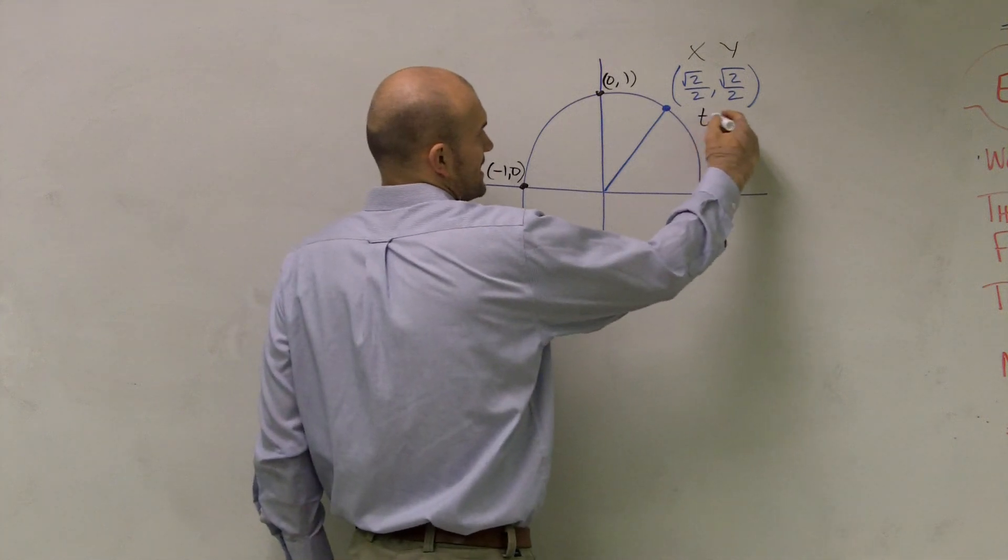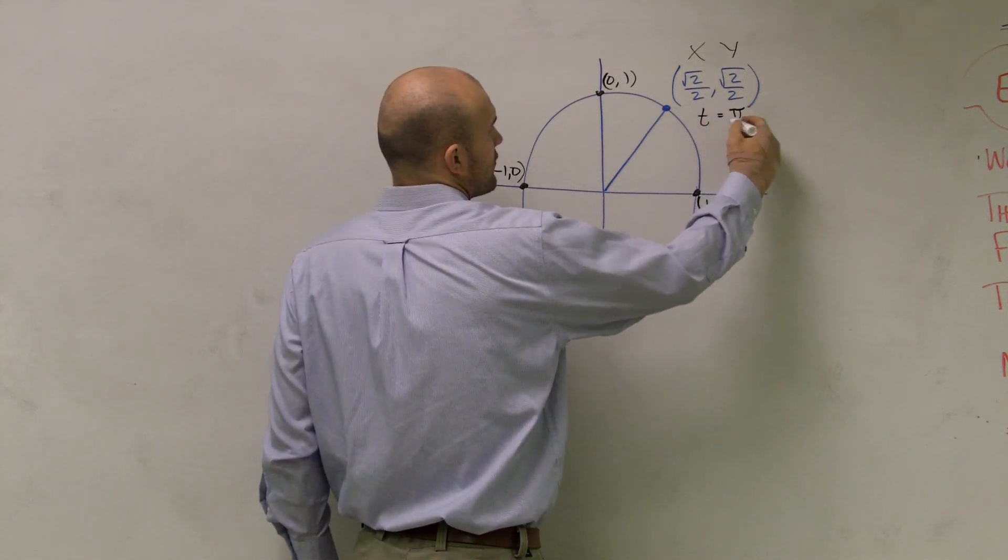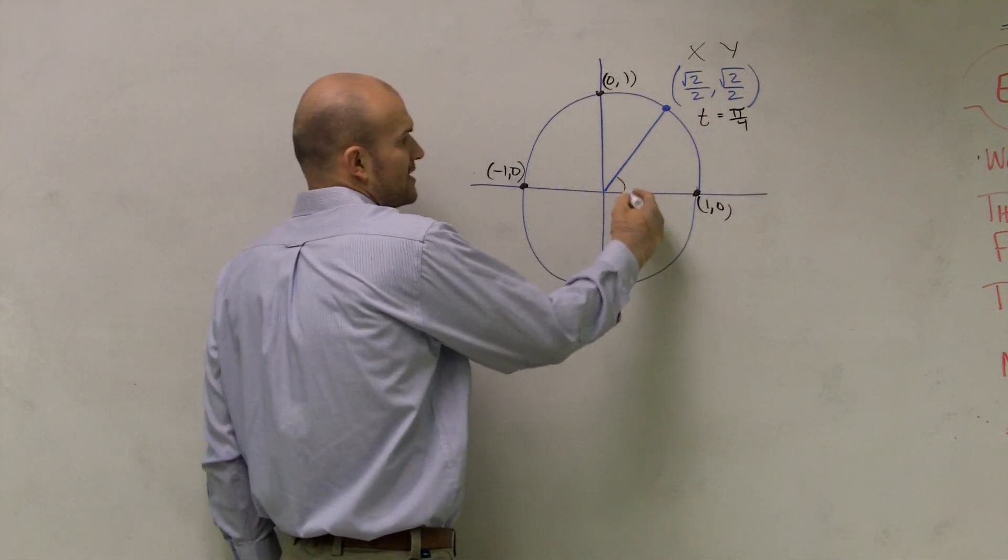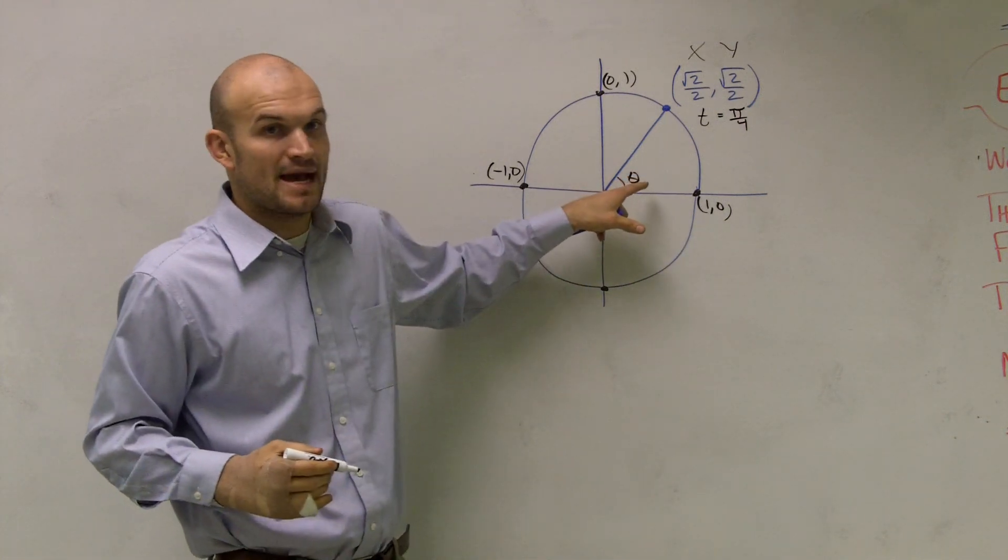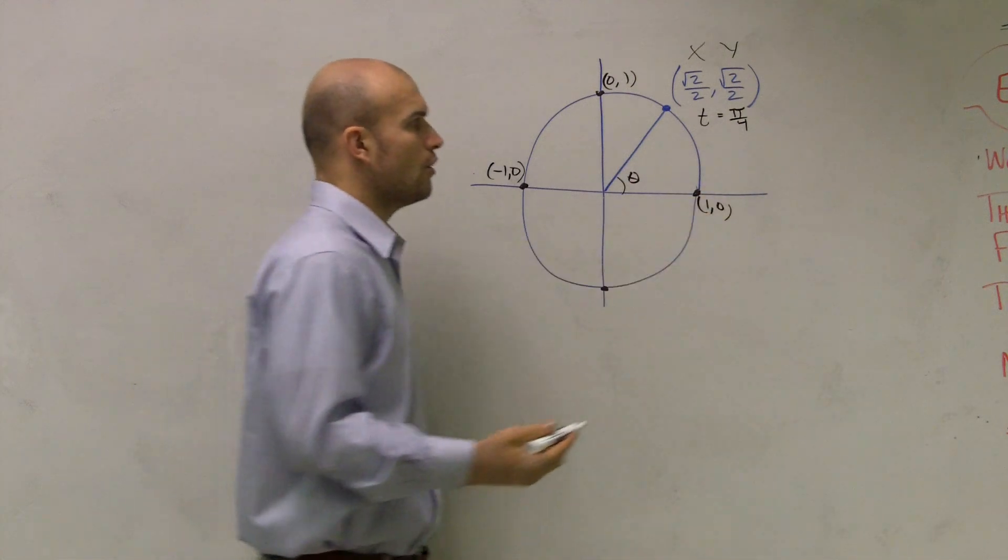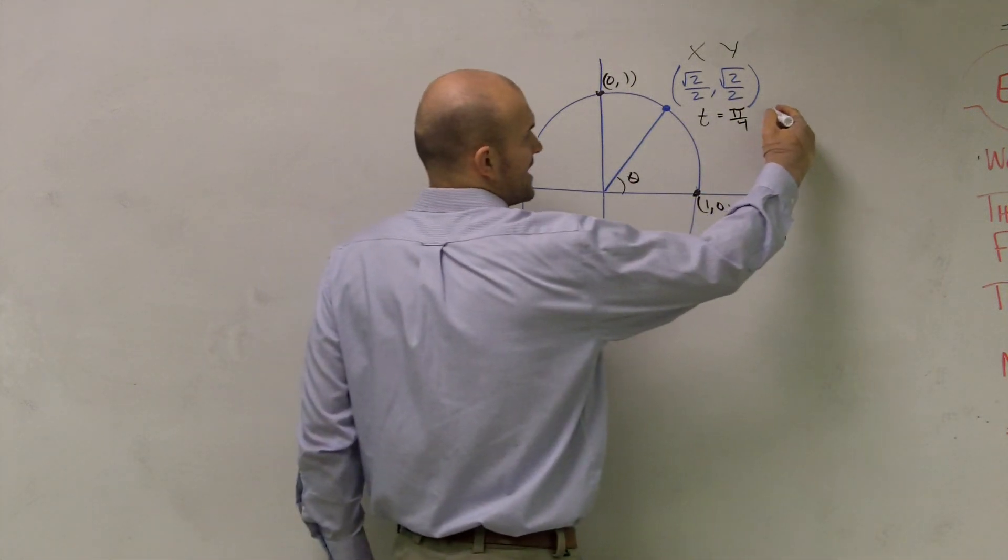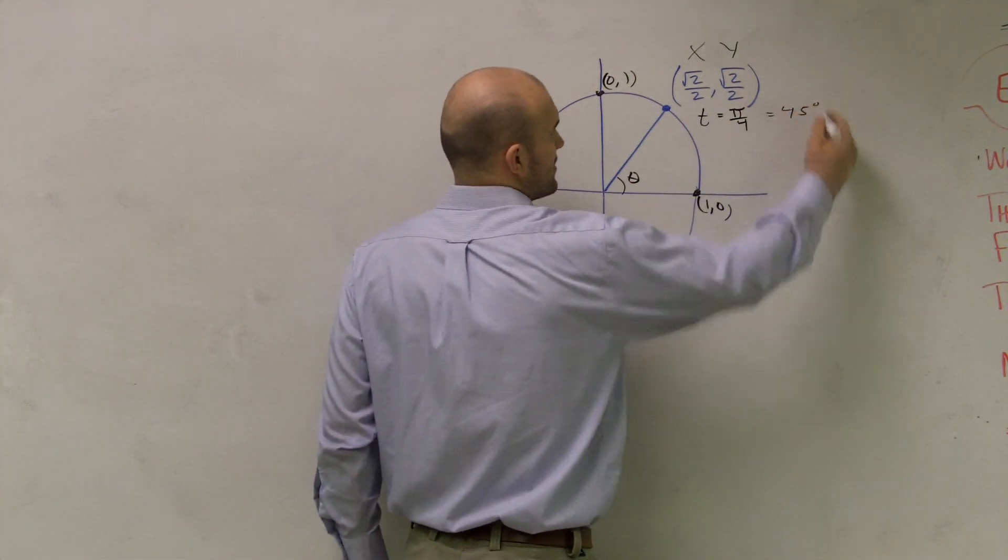This is my point T for pi over 4 radians. That means when my theta, the measurement of my angle in radians, is pi over 4. Or in degrees, we might say that is the same thing as 45 degrees.